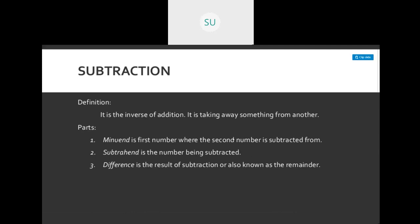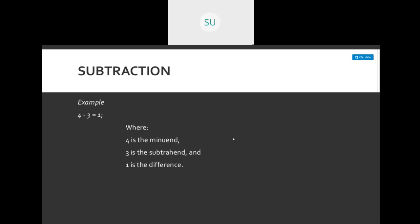The different parts in subtraction: the minuend is the first number from which the second number is subtracted. The number that is being subtracted is called the subtrahend. The result of subtraction, also known as the remainder, is called the difference. So remember: minuend is the first number, subtrahend is the number being subtracted, and difference is the result. Example: 4 minus 3 is equal to 1 — here 4 is the minuend, 3 is the subtrahend, and 1 is the difference.